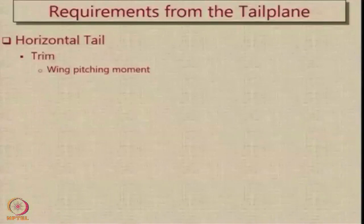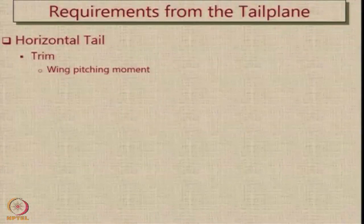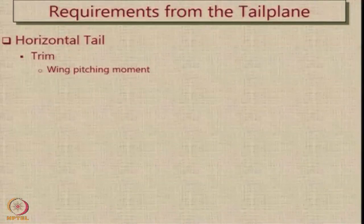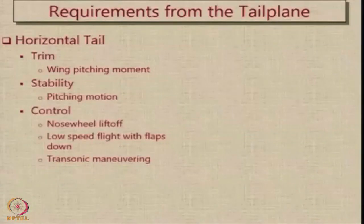The horizontal tail is provided to serve two main missions. One is to provide trim of the aircraft — there is going to be a wing pitching moment and that pitching moment has to be cancelled out by providing adequate trim. Then you require it for stability in the pitching motion, and finally we want it for control or to do certain tasks.